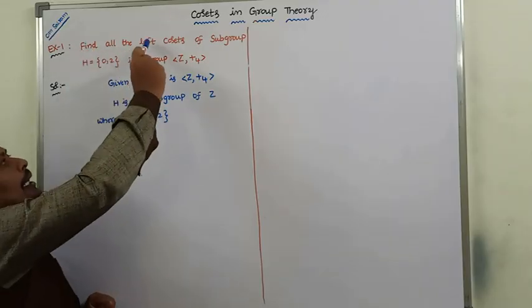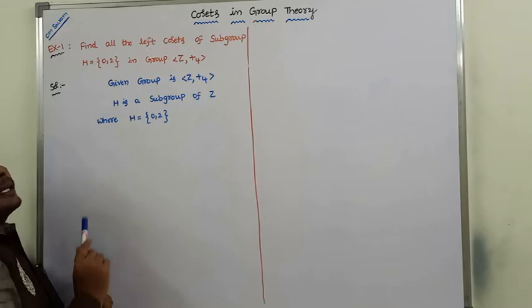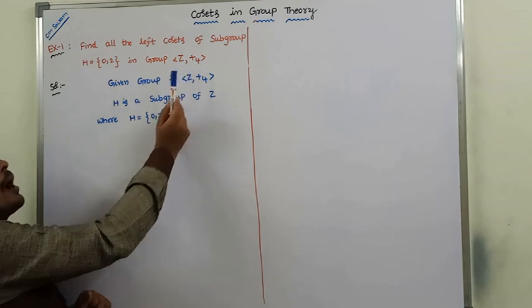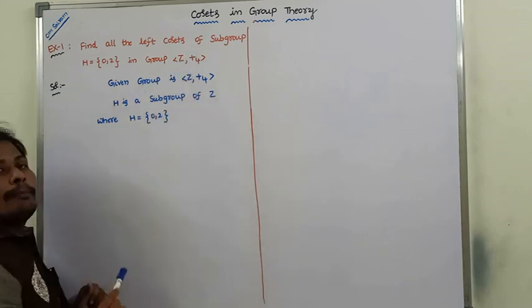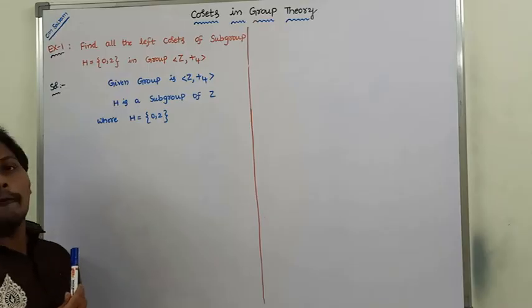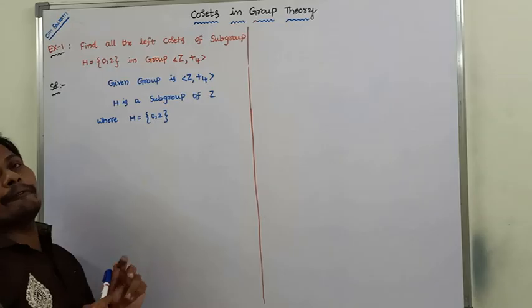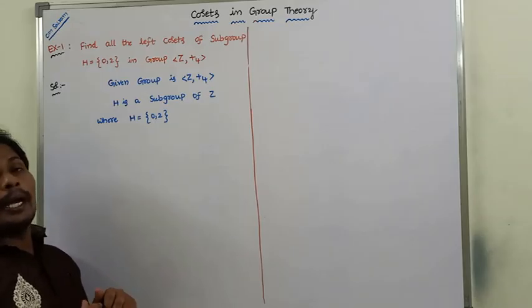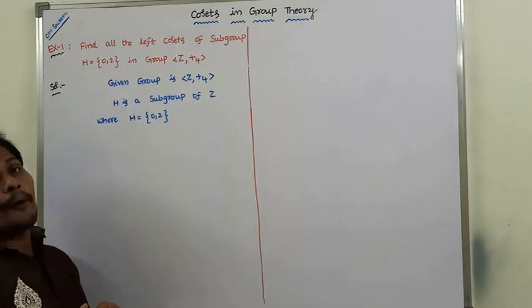Find all the left cosets of subgroup H, where H is defined as the set {0, 2}, in the group Z with +mod4. Here, +mod4 means addition modulo 4, and that is the operation performed on the elements of Z.